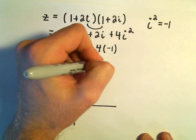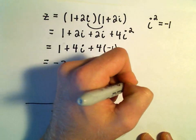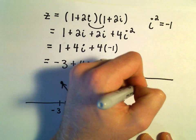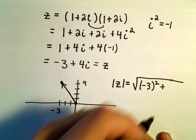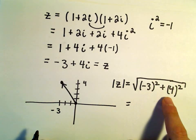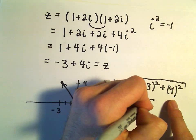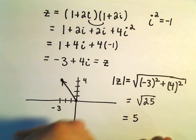To find the modulus, I think we called this one z. To find the modulus, we'll just take negative 3 squared and add to that 4 squared. That's going to be 9 plus 16 which gives us 25, and the square root of 25 is just going to be 5.